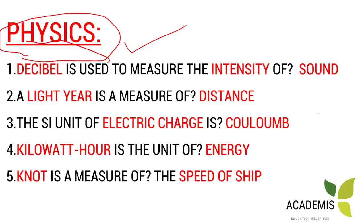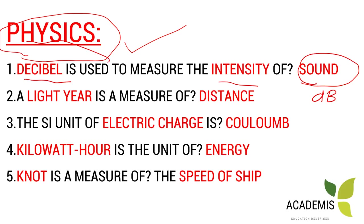Decibel is used to measure the intensity of sound. Decibel is the unit for measuring intensity — you see it written as 'dB', with a small letter 'd' and capital 'B'. Decibel is the unit of sound intensity measurement, represented as dB.